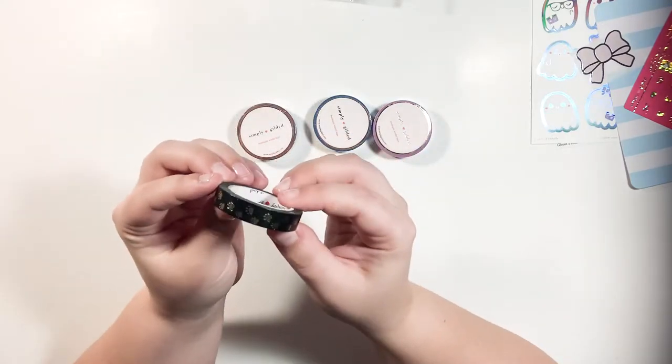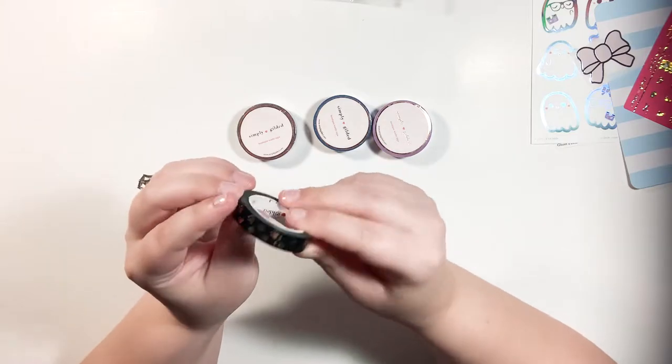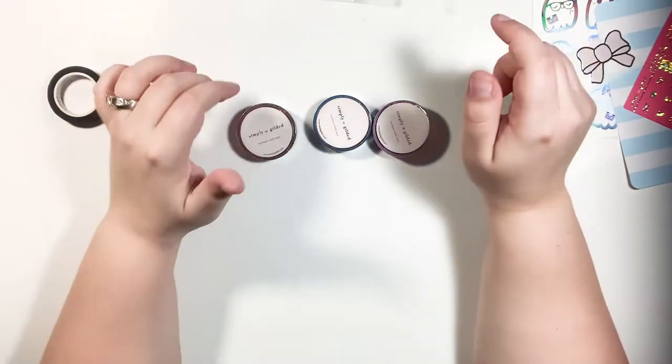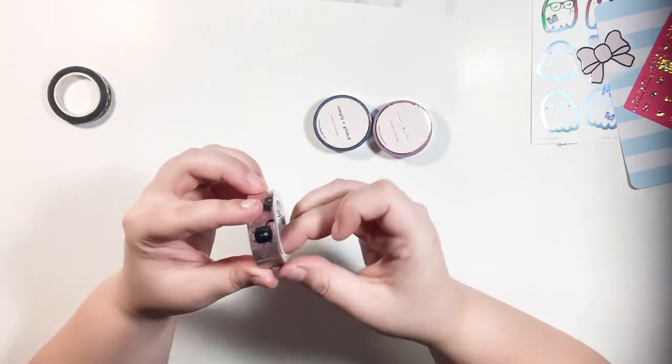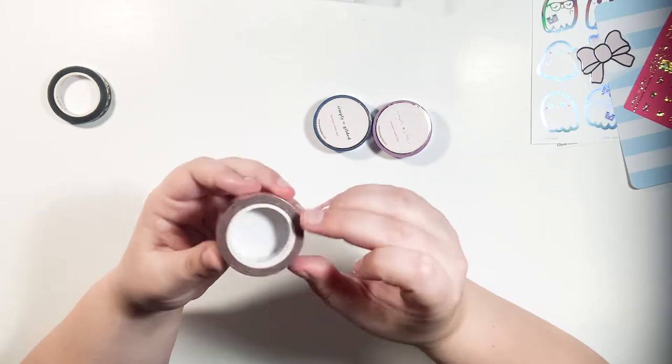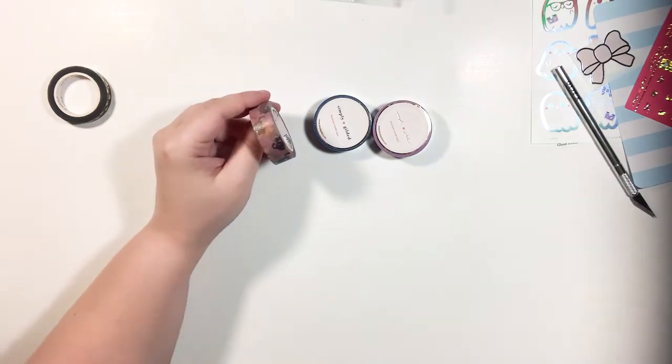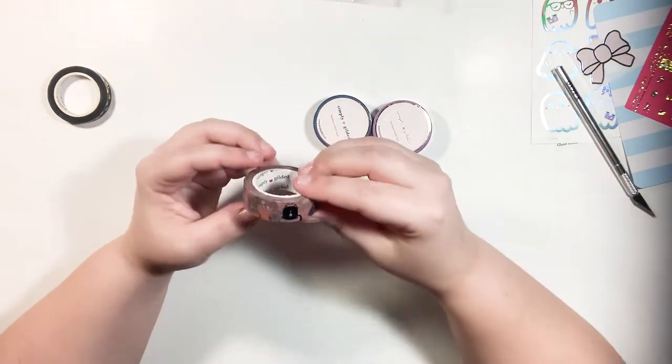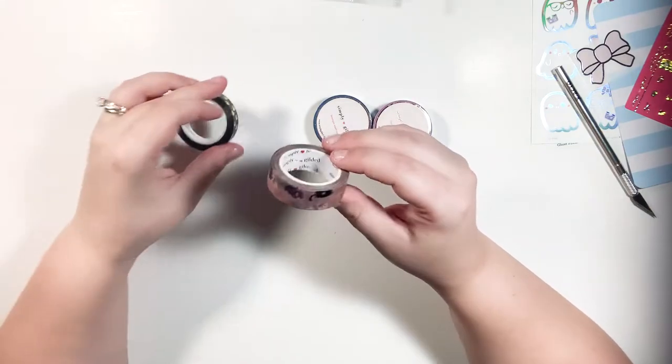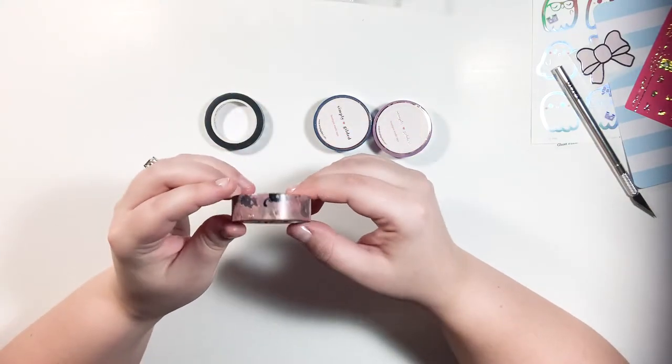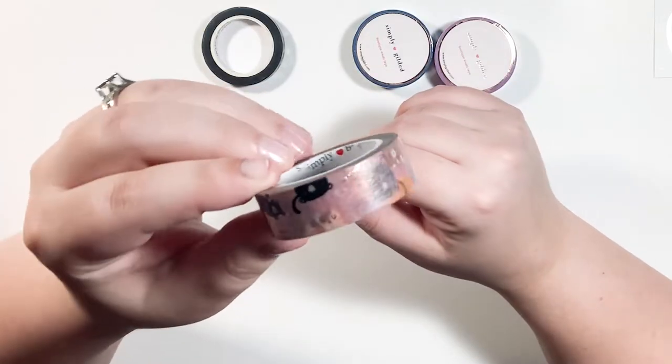So, I got some little paw prints. Oh my God. Little gold paw prints. So cute. And to go with that, I got this cat washi. If I can figure out how to open it. This is so cute. And I'll do swatches of these in a minute. Oh my gosh. So cute.